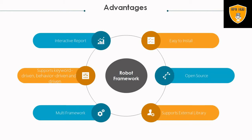Robot Framework has multiple advantages. One is interactive reports — we are able to see reports without having to create them manually. It is an inbuilt feature where after running an execution, a report is generated showing how many cases failed, how many passed, percentage, and all complete details. These can be received in email or checked from a folder.